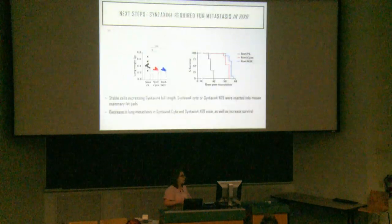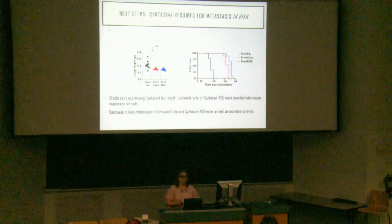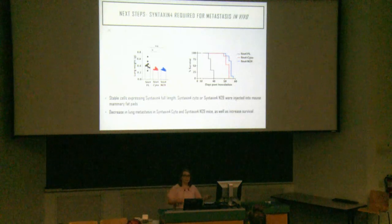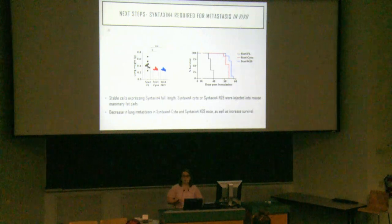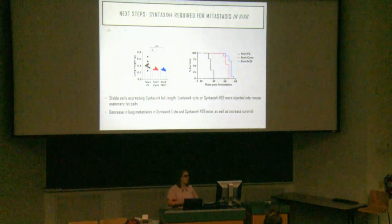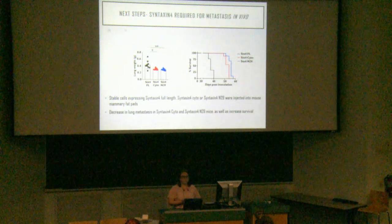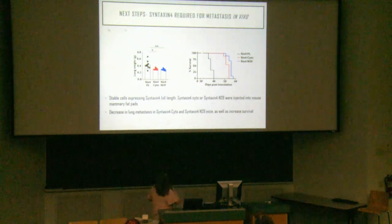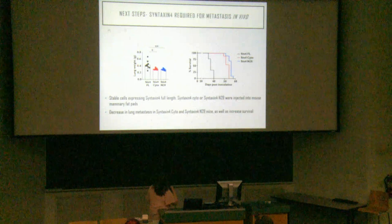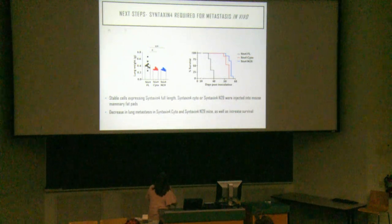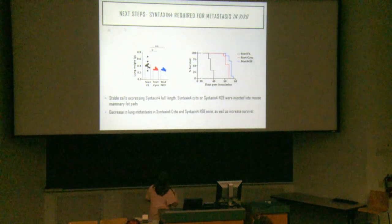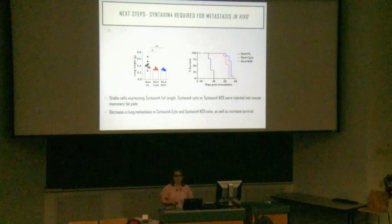For next steps, we sent stable cell lines expressing Syntaxin-4 full-length, Syntaxin-4 cyto (lacking the plasma membrane domain, acting as a competitive inhibitor), and Syntaxin-4 N-terminal to BC Cancer. They injected these cell lines into immunocompromised mice in the mammary fat pads and examined lung metastasis. In our control Syntaxin-4 full-length group, we observed a fair bit of metastasis by lung weight measurement. However, mice injected with Syntaxin-4 cyto or Syntaxin-4 N-terminal had decreased lung weight — meaning these cells can't metastasize as easily. A Kaplan-Meier survival curve showed that Syntaxin-4 full-length mice did not survive as long as the treated groups.